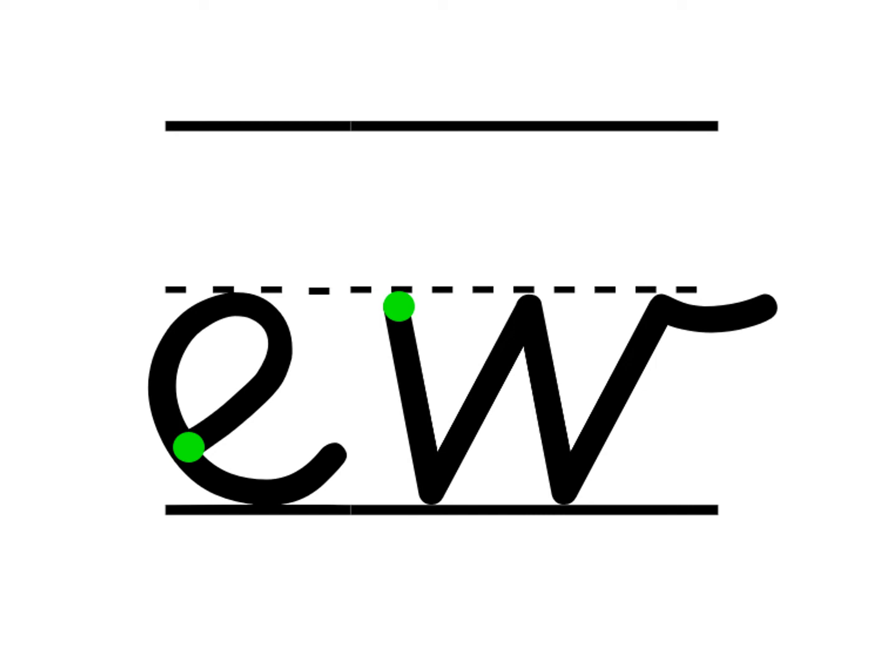The E is a curly caterpillar letter. Let's practice forming it in the air. Put your finger on the green dots and go up, around and down. One more time. Up, around and down.